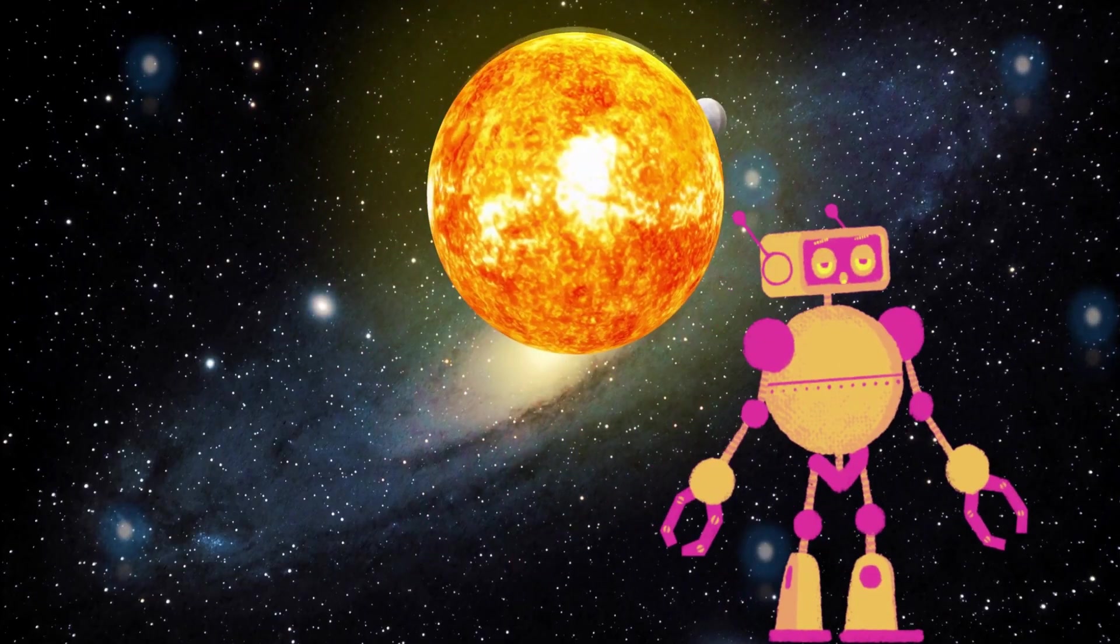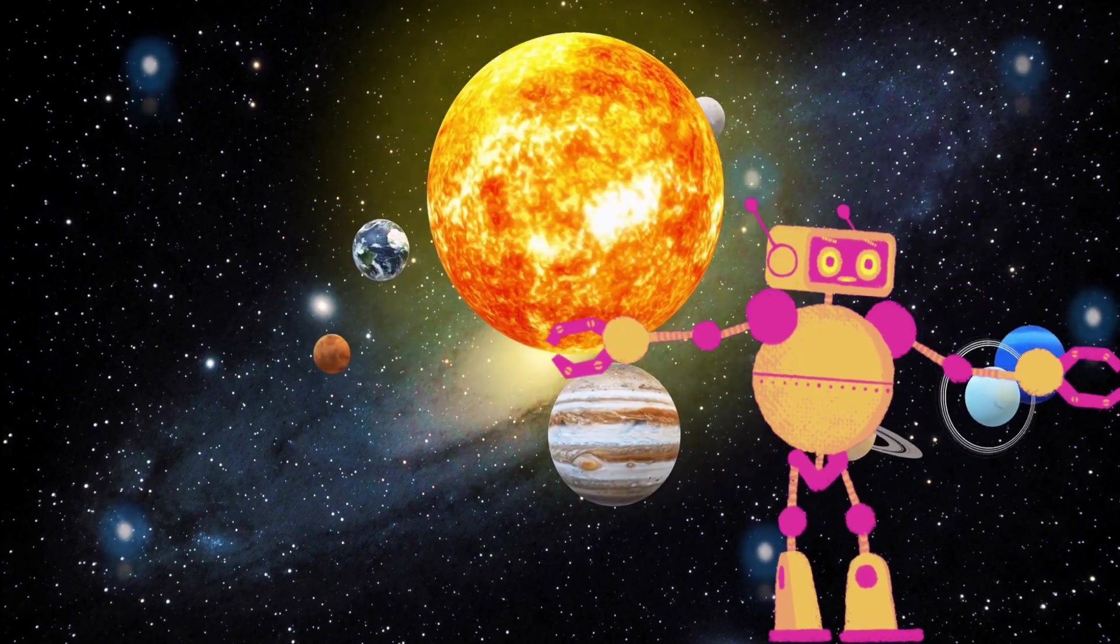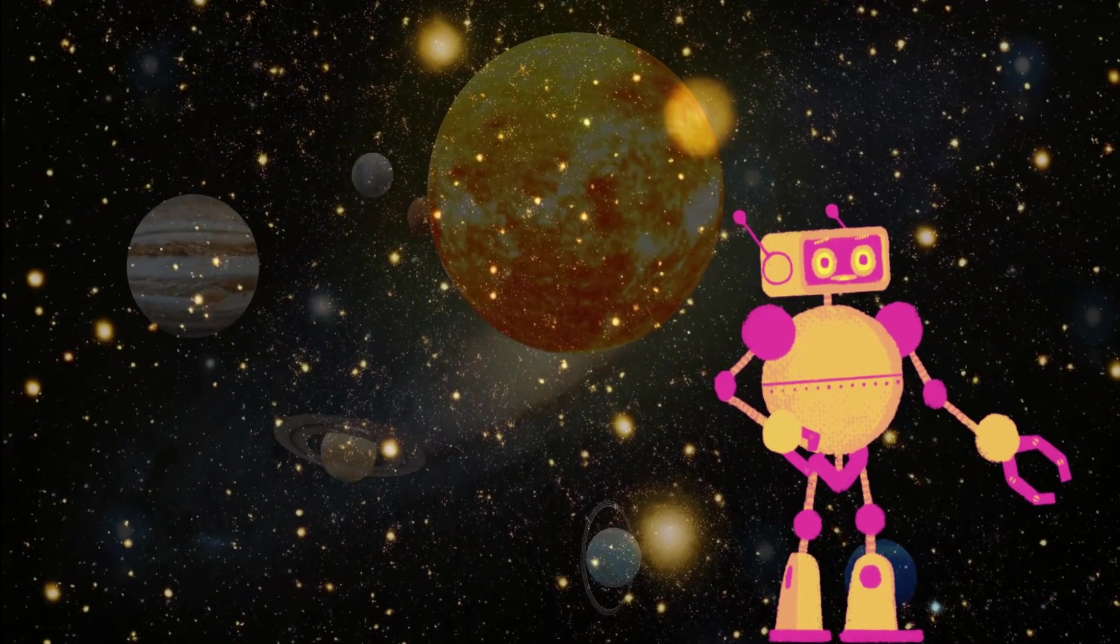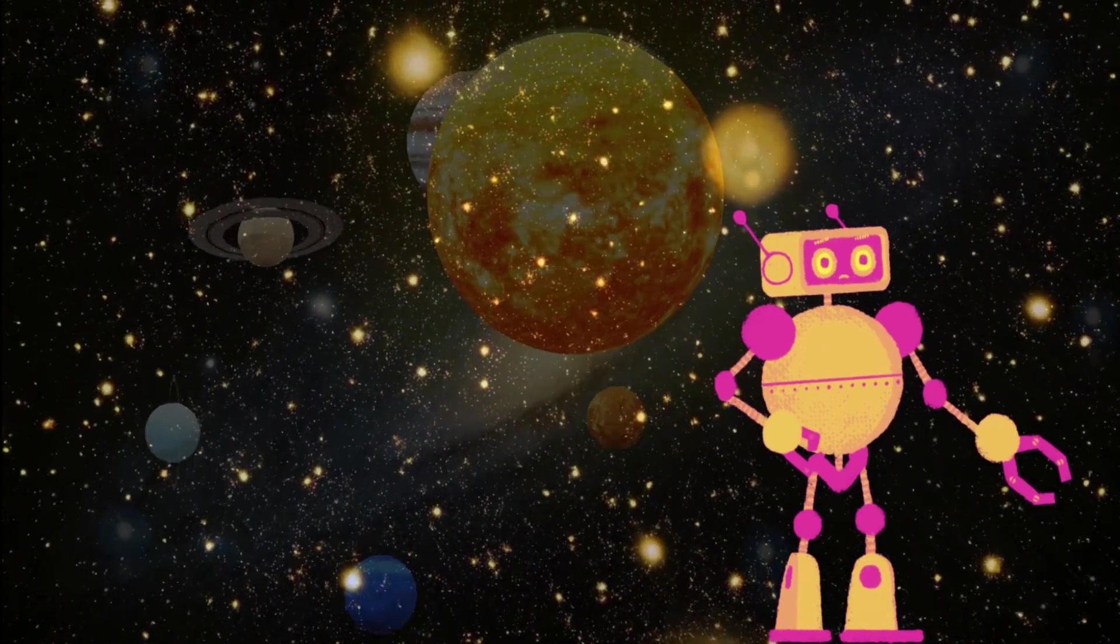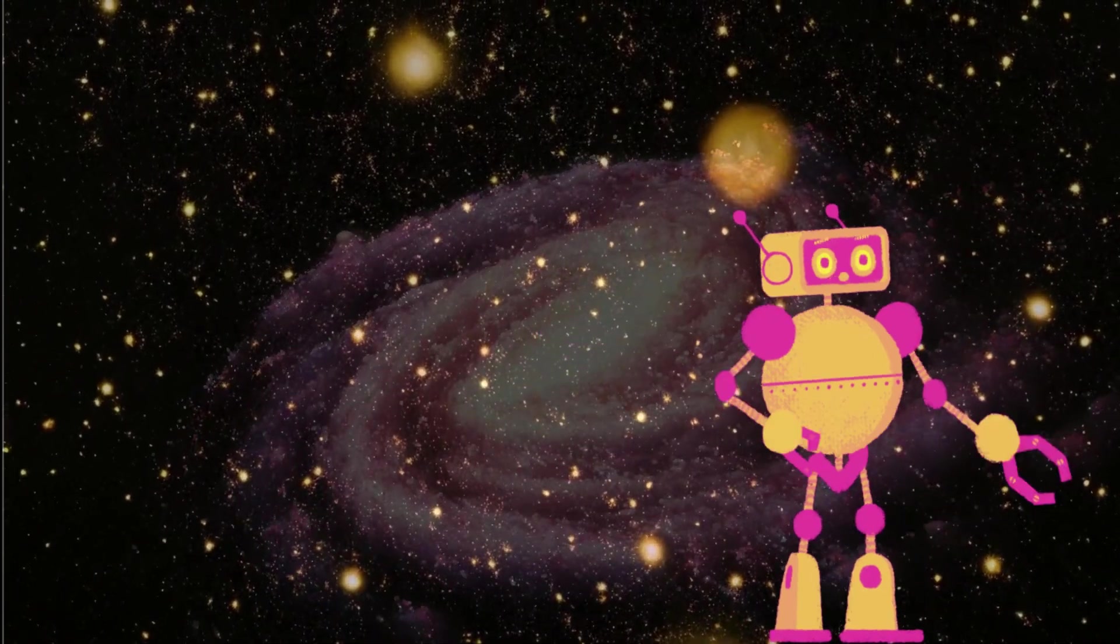Comets and meteoroids, cosmic wanderers. Our solar system is also home to comets and meteoroids. Comets are icy bodies that release beautiful tails when they approach the Sun, and meteoroids are small rocky fragments that can create shooting stars when they enter Earth's atmosphere.